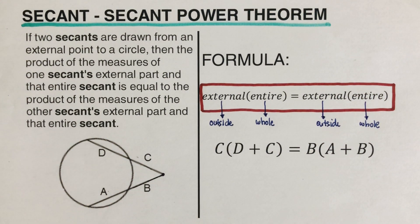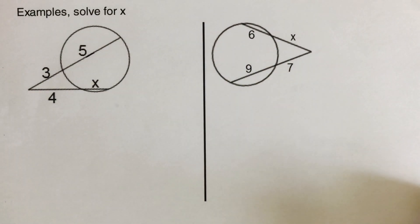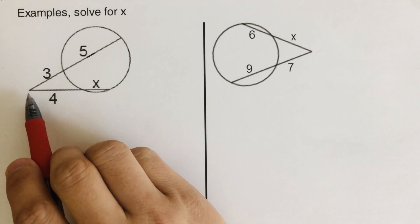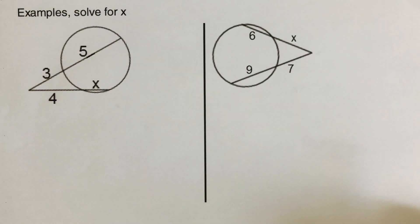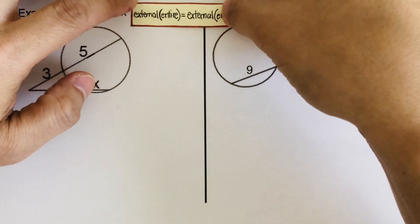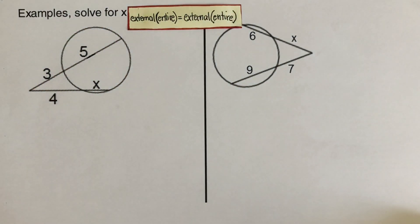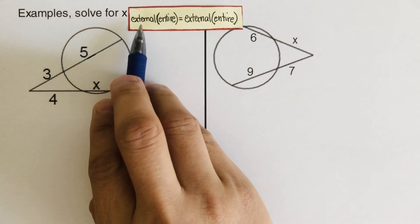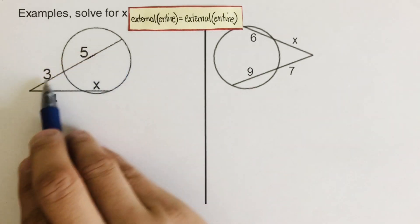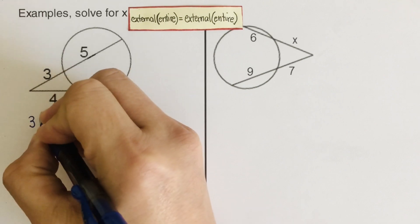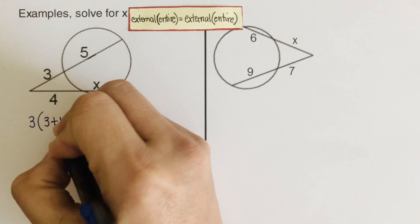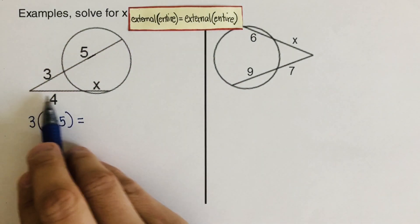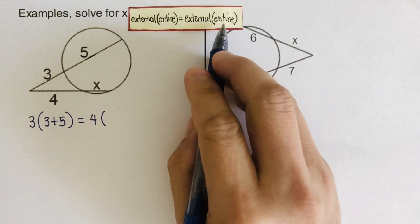To better understand this, let's look at the first example. We are given 3 on the external segment, 5 on the inside, 4 on the external, and x on the inside. Using our formula, we take this secant first: the external is 3, times the entire which is 3 plus 5, and that equals the external of the other secant, which is 4, times the entire which is 4 plus x.